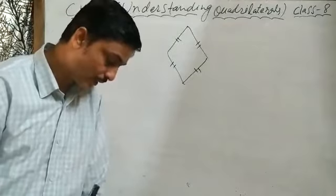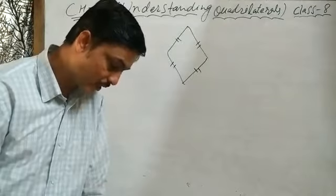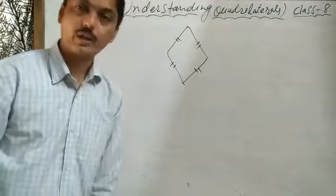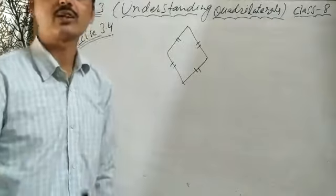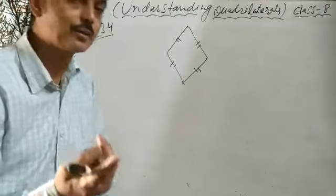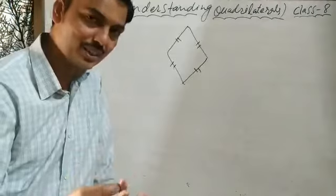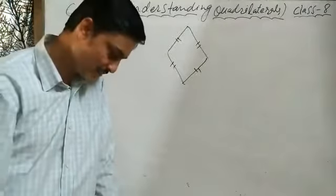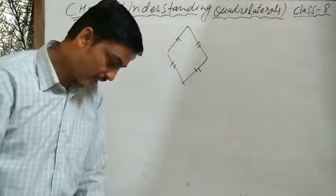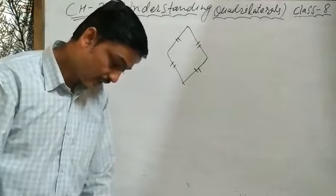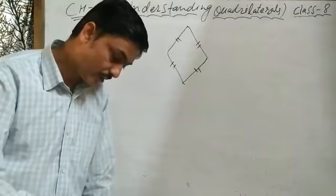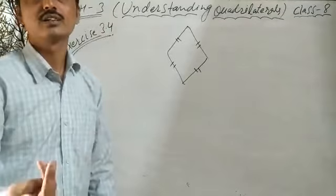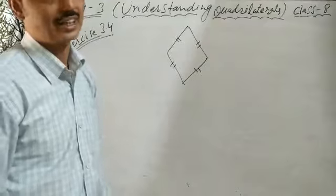Question 2: Identify all the quadrilaterals that have four sides of equal length — rhombus and square. Quadrilaterals with all four right angles — rectangle or square.